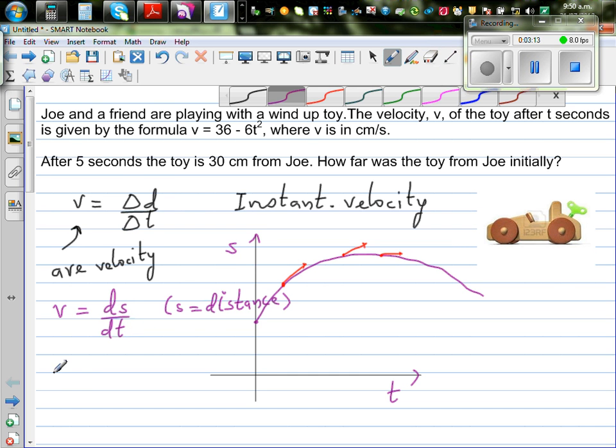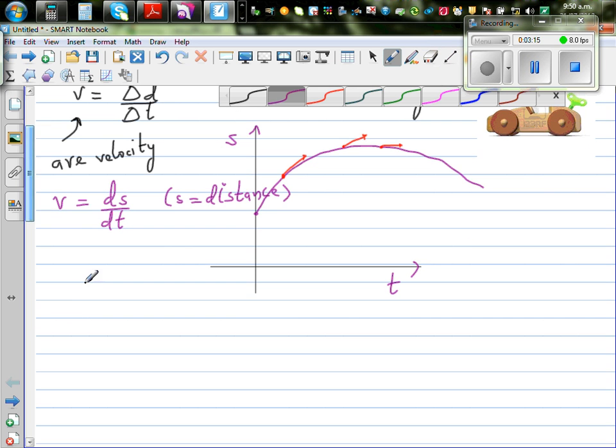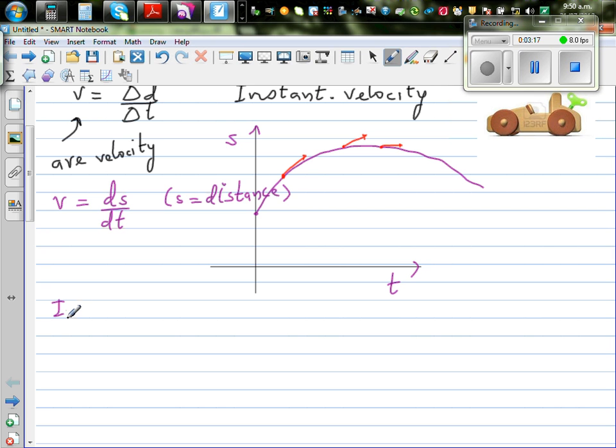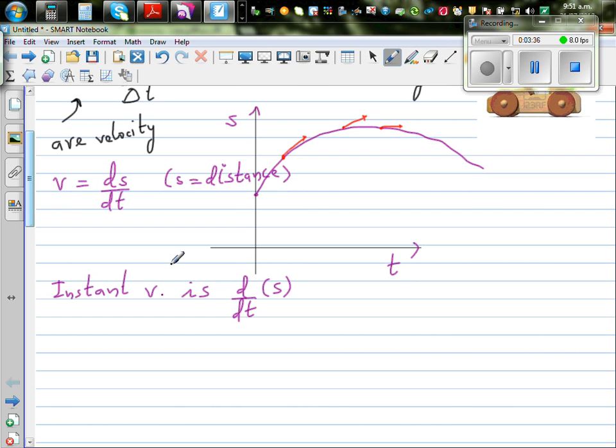So velocity or instantaneous velocity is the differentiation of S with respect to time. So let me write. So we can say instantaneous velocity is d by dt of S.